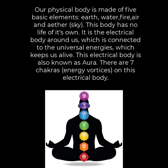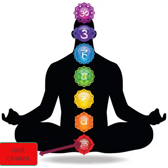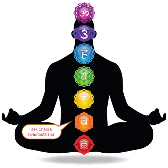In this electrical body there are seven chakras. Starting from the root chakra at the bottom, below the spinal cord — the exact location is between the anus and the scrotum. For the female, it is two inches inside the vagina. Then the Swadhisthana chakra, the sacral chakra.